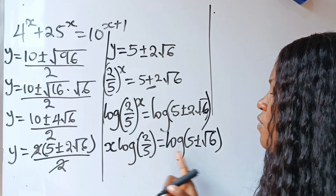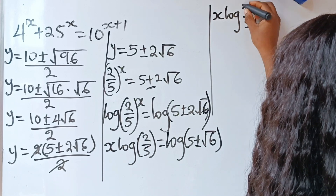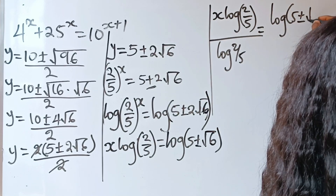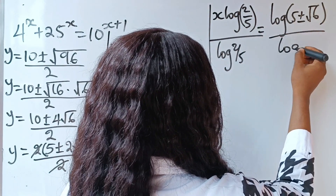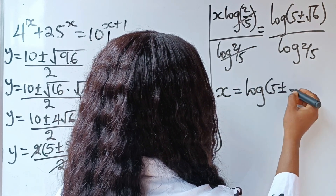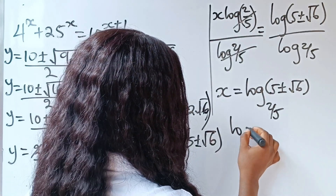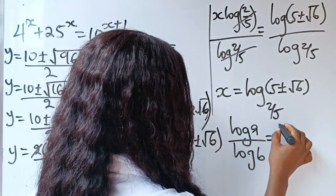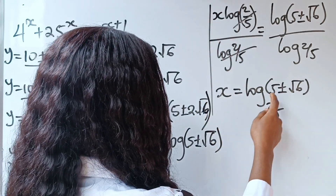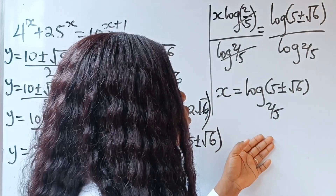For us to get the value of x, we divide both sides by log 2 over 5. So x log 2 over 5 divided by log 2 over 5 is equal to log of 5 plus or minus 2 root 6 over log 2 over 5. Therefore x is equal to log base 2 over 5 of (5 plus 2 root 6), or x is equal to log base 2 over 5 of (5 minus 2 root 6). So these are the two values of our x.